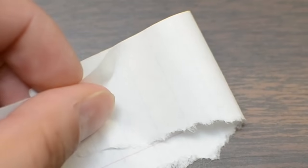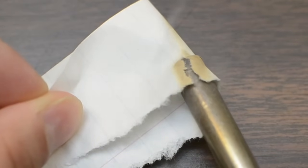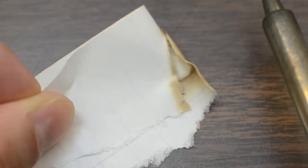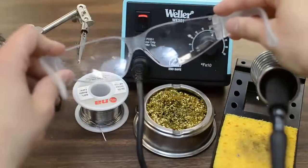One more note, solder is very hot. Its melting temperature is almost twice the temperature of boiling water. Hot metal looks the same as cold metal, so be really careful. Also, especially if you're a beginner, you should be wearing safety goggles.